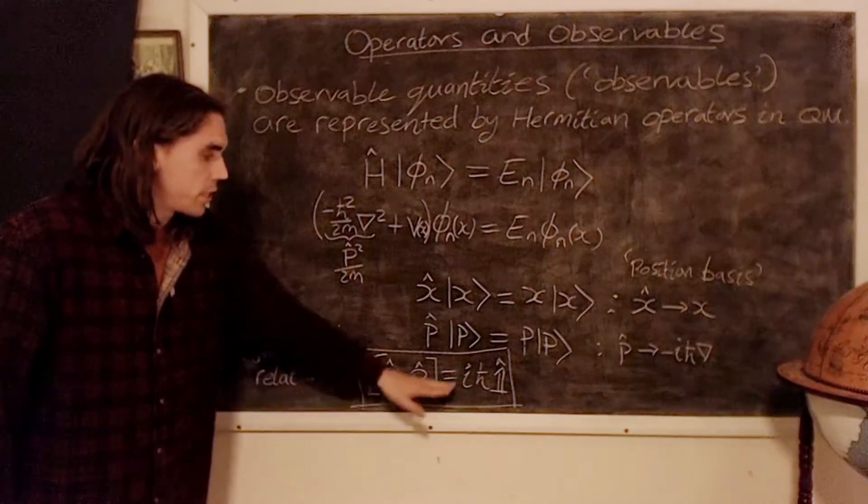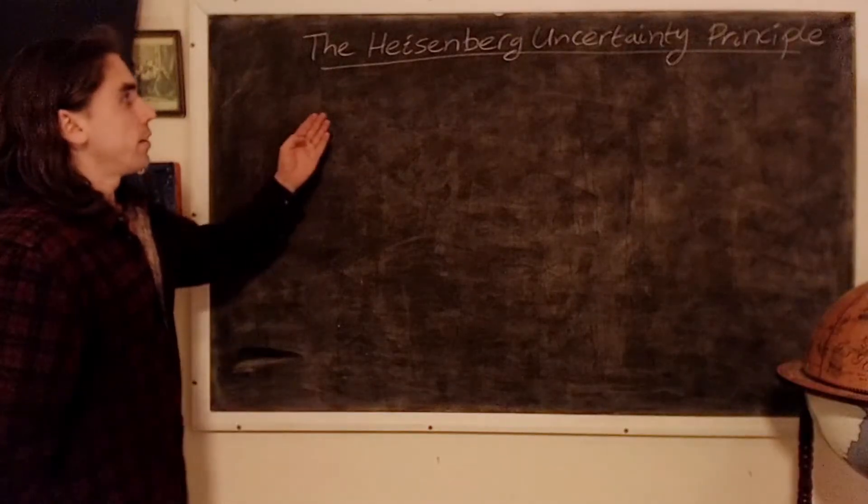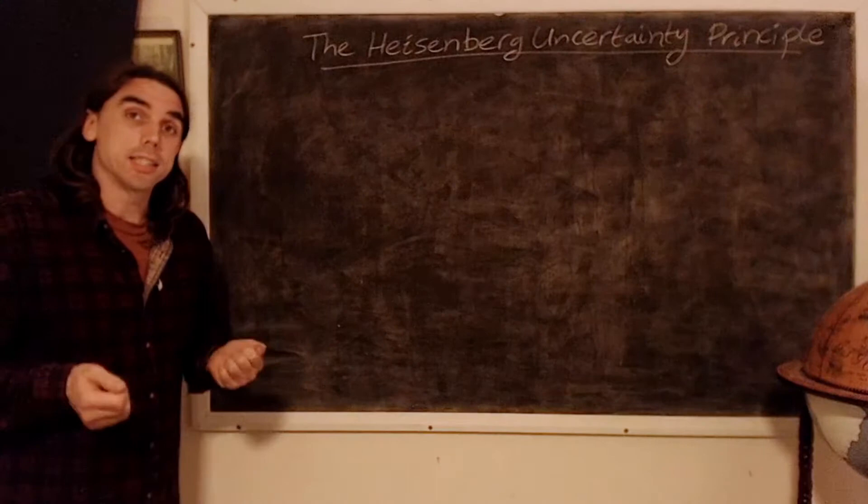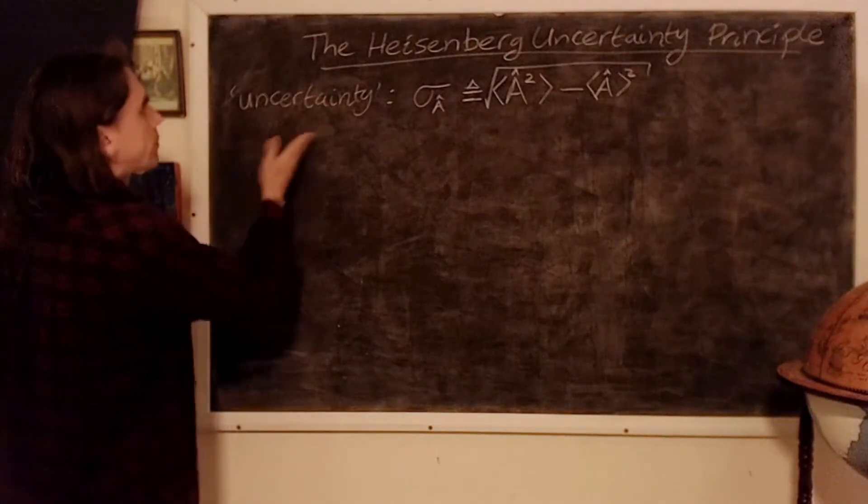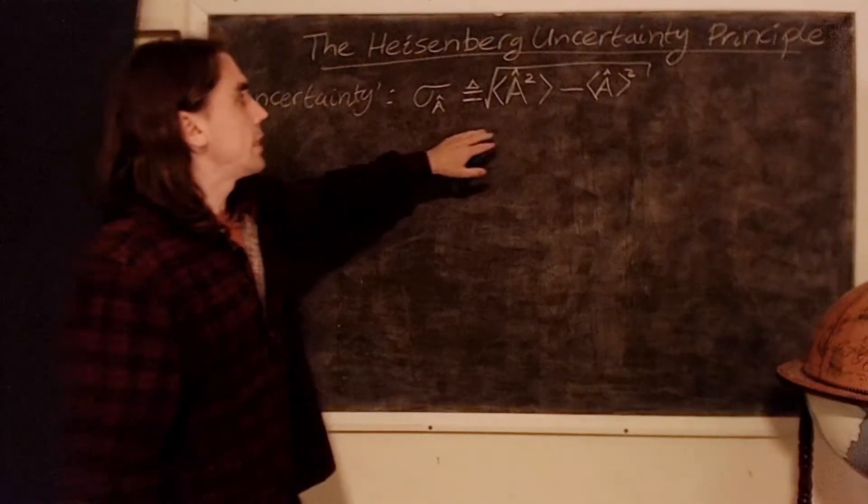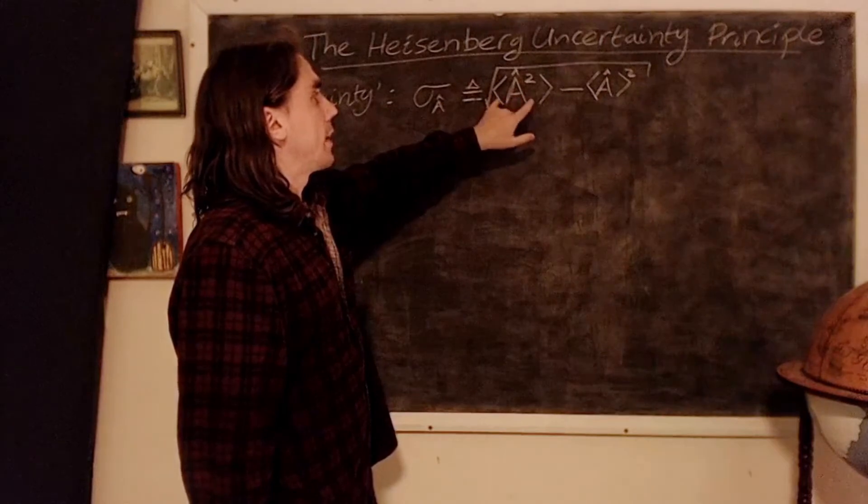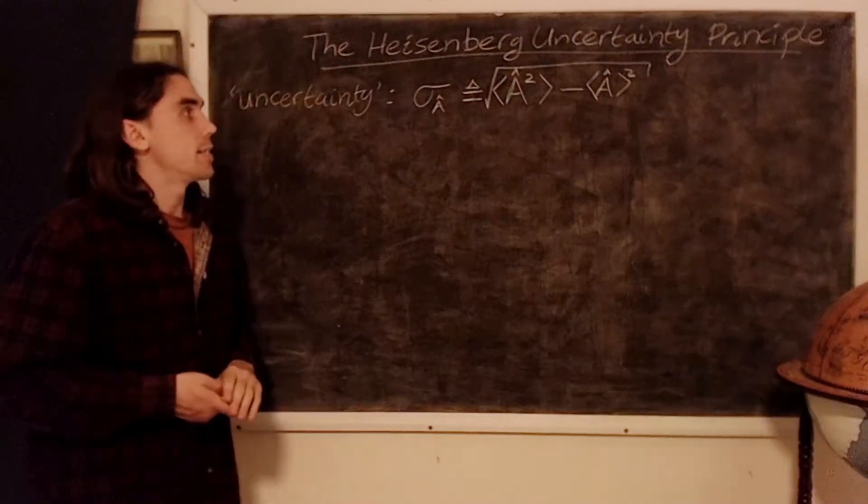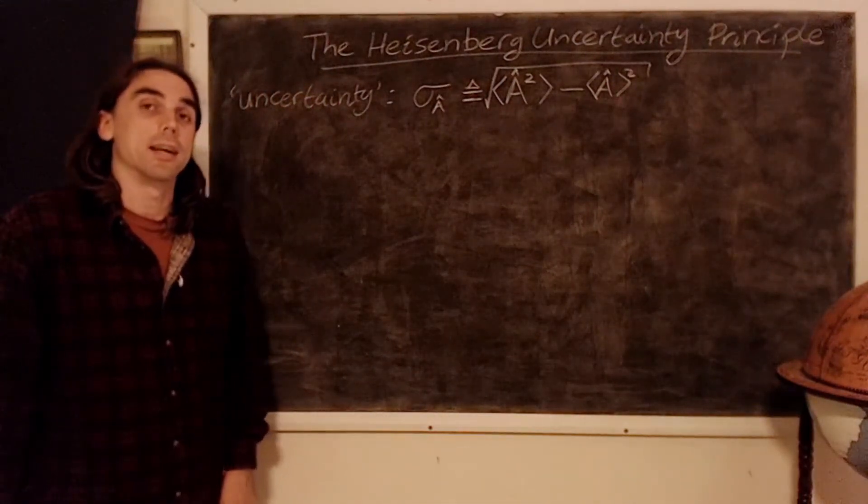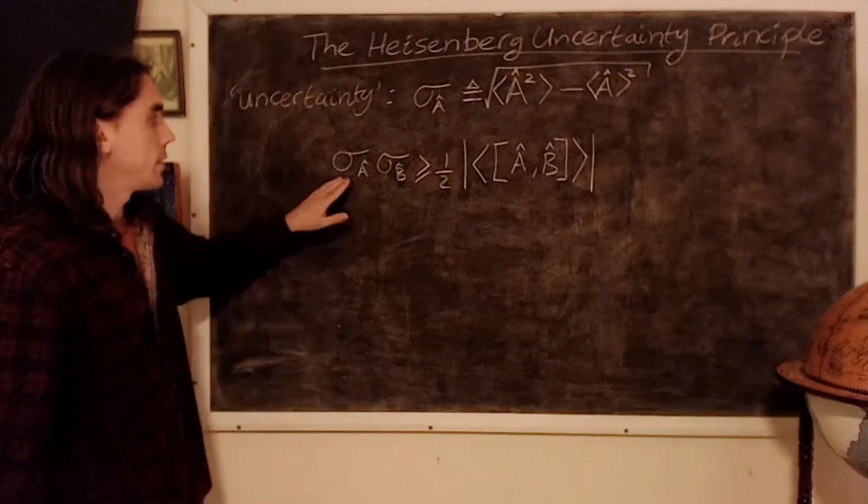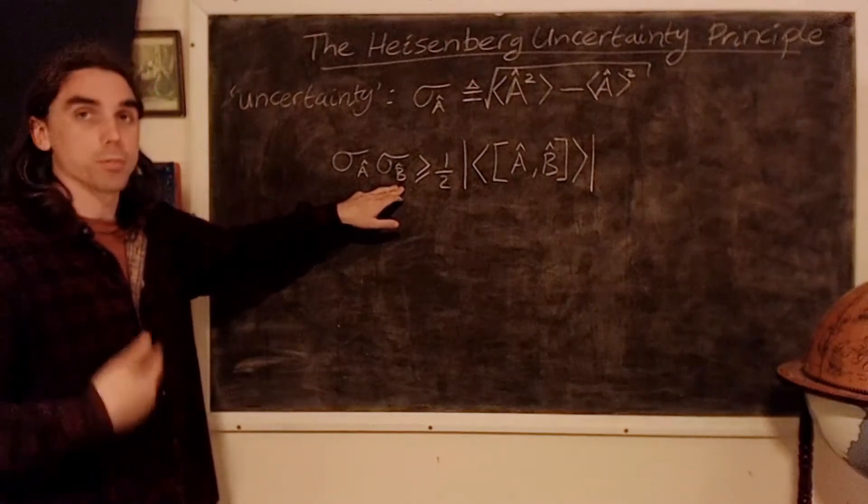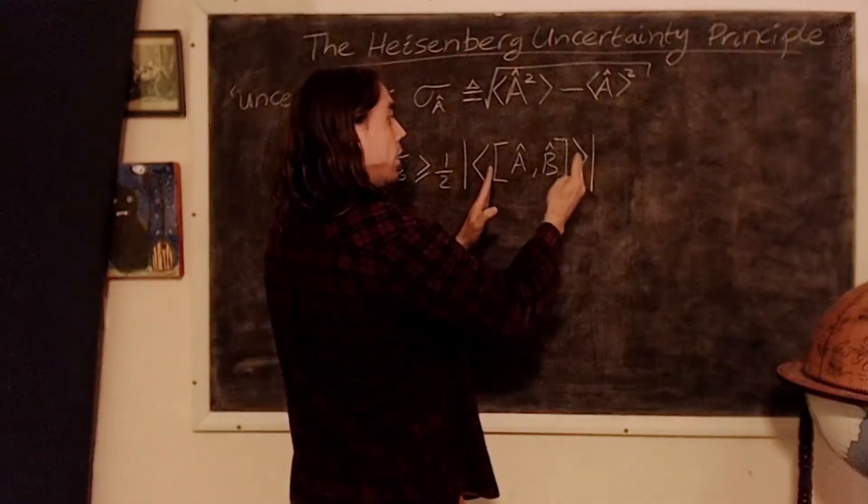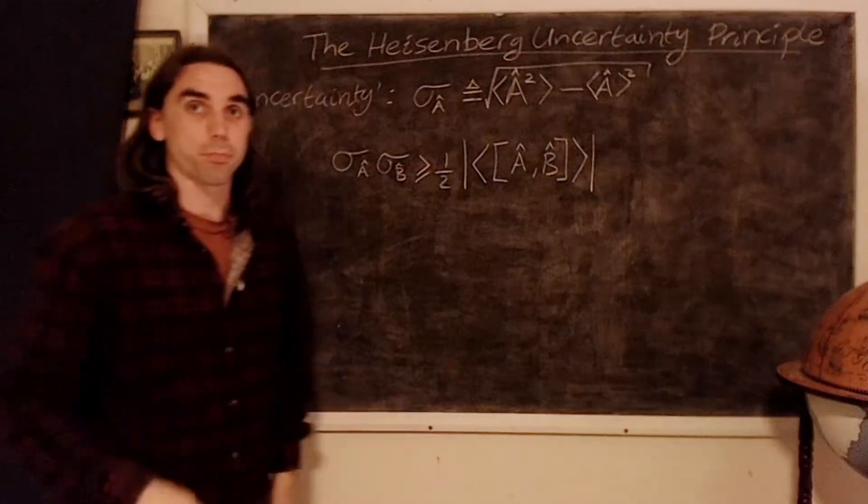So let's put this to some use to derive a very famous result, the Heisenberg uncertainty principle. So we define the uncertainty in quantity to be its standard deviation as follows. So the standard deviation of a quantity is given by the square of the quantity and the average over that minus the average of the quantity squared, and then we square root that. And there's a not too difficult but somewhat lengthy derivation of the following result. The product of the uncertainties in operators a and b and the corresponding observables must be greater than or equal to a half multiplied by the modulus of the average of the commutator of the quantities, or the corresponding operators.